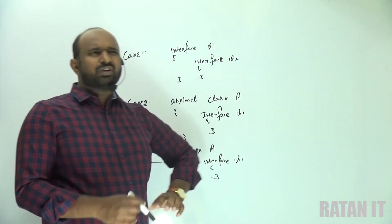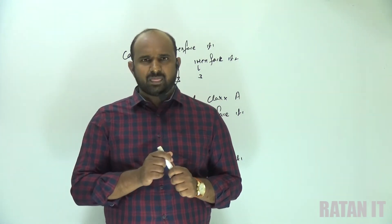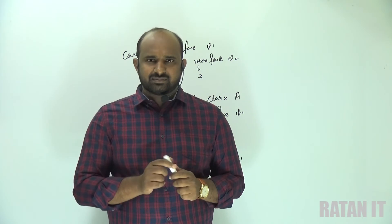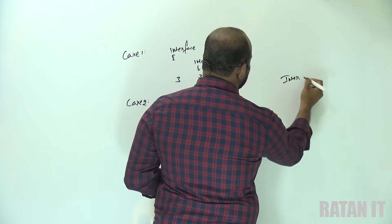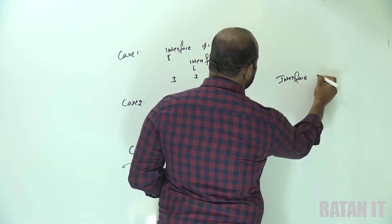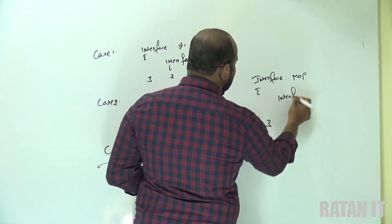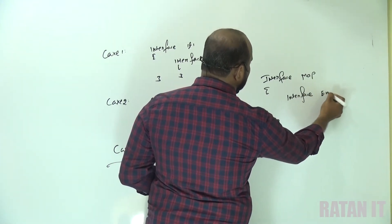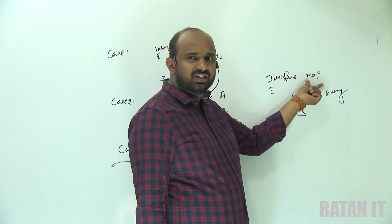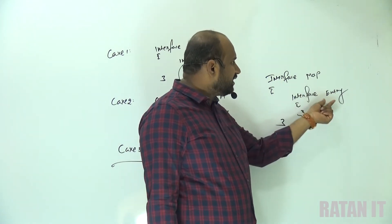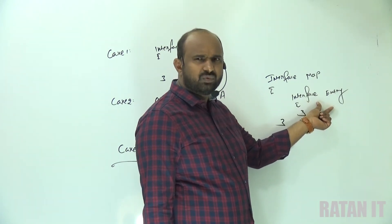In the Java collections framework we have the Entry interface. Entry is a sub-interface of Map. So inside the Map interface, there is an Entry interface declared. The reason whenever we call the Entry interface we call it as Map.Entry — Map dot Entry.